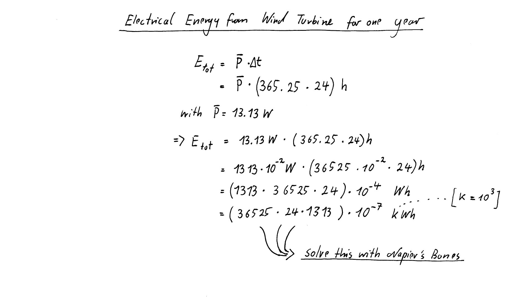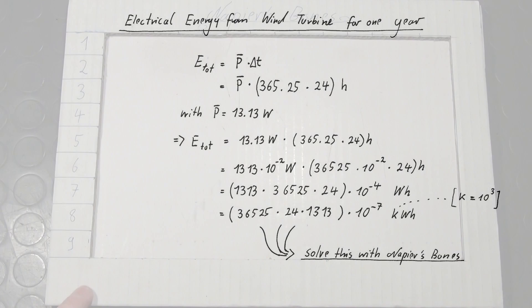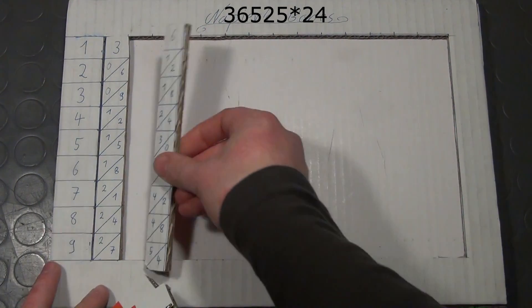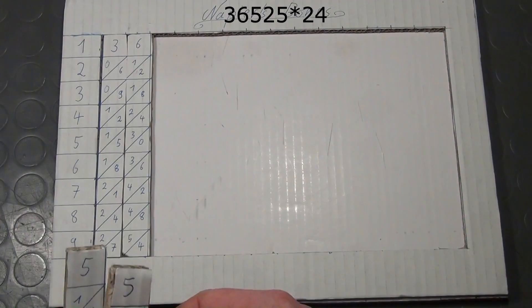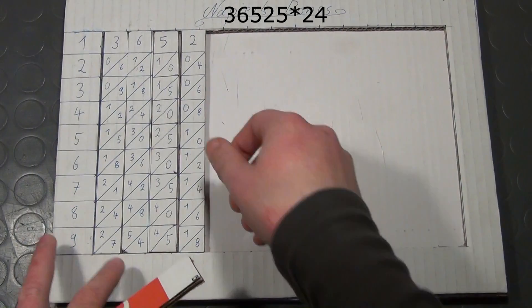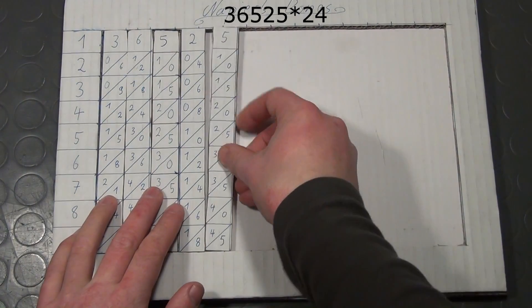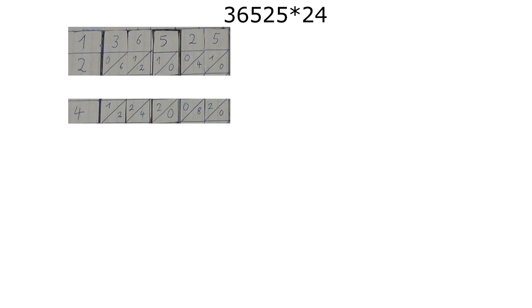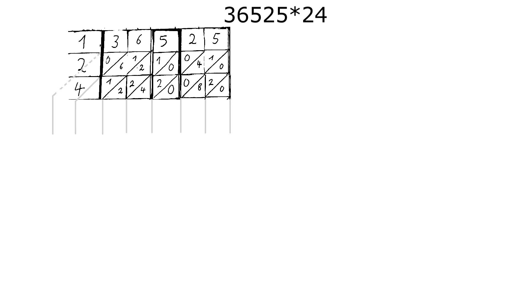Now all we have to do is to calculate the sum of the three numbers with the help of Napier's bones. Then we will use the power of 10 to retrieve the decimal point. The first multiplication is 36.525 times 24. First I place the rods inside the frame. For this calculation I need a second number 5 bone. Now you have to take row 2 and 4 and write them down like this. And you can start calculating.